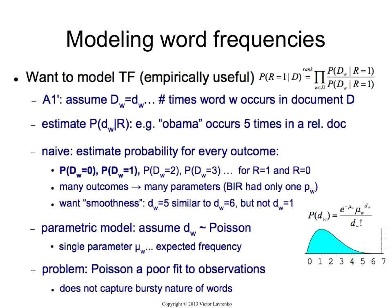The nice thing about this is you have a single parameter for each word, very much like what we had in the binary model. In the binary model we had p_w, the probability that the word occurs; now we have mu_w, the expected frequency. So that's good — it's nice and it's easy to estimate. The problem is Poisson by itself is a relatively poor fit to observations.